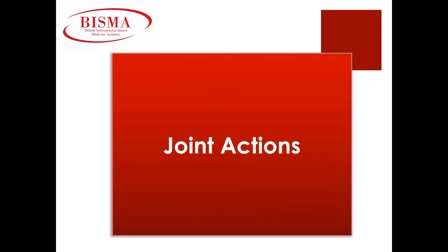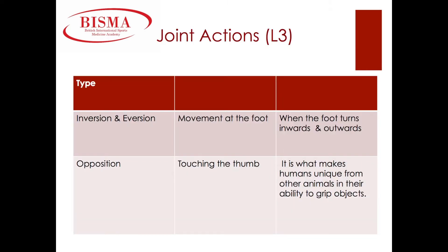Joint actions. We covered many joint actions at level 2, and there are a few more that we must cover at level 3. Beginning with inversion and eversion — this movement occurs at the foot within the transverse plane. Inversion is where the sole turns to face inwards, and eversion is where the sole turns to face outwards. Opposition describes the movement of touching the thumb to the fingers, and it's what makes us as humans unique from other animals.